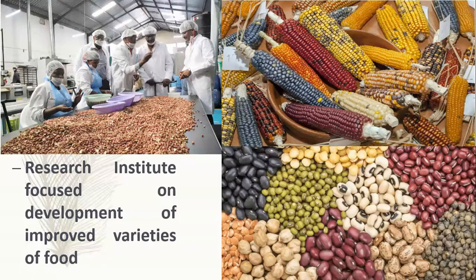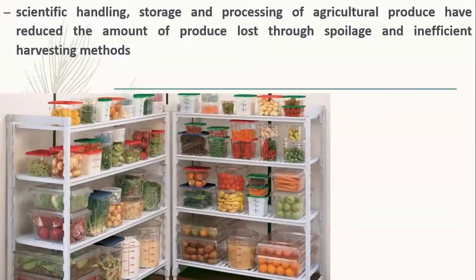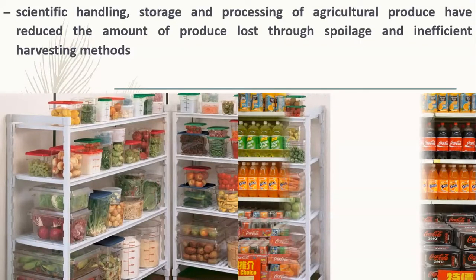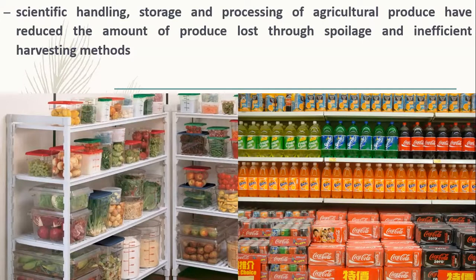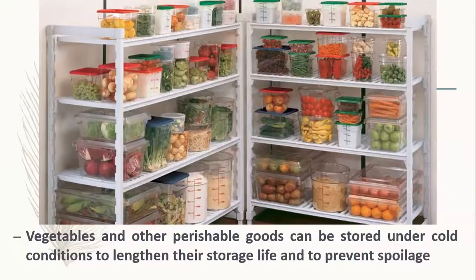We now have various varieties of crops that come with different colors, different shapes, and can be grown within a very limited time. The process of handling, storing, and processing agricultural products has reduced much loss through spoilage and inefficient harvesting. Vegetables and other perishable goods can be stored under cool conditions, which extends the period before they get spoiled.